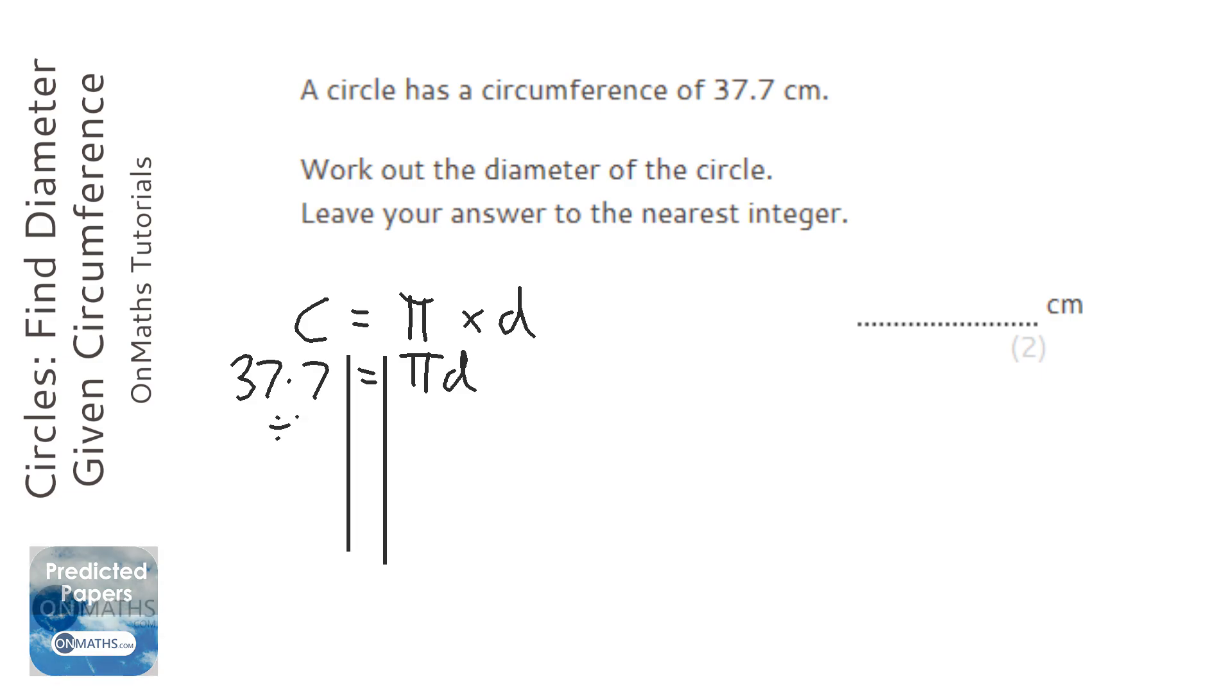all I need to do is divide pi from both sides. So on the left-hand side, let's do this, 37.7 divided by pi gives me 12.00028 blah blah blah.